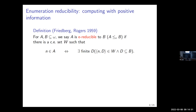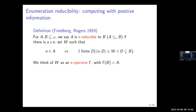Notice that this depends only on positive information about B — the fact that D is a subset of B is enough to witness that N lies in A. Unlike a Turing reduction, we're not using the fact that any number is not in B; we're only using the fact that some numbers are in B. In a way, this reduction is transforming positive information from the oracle into positive information of the output.